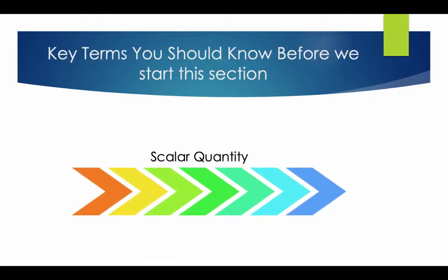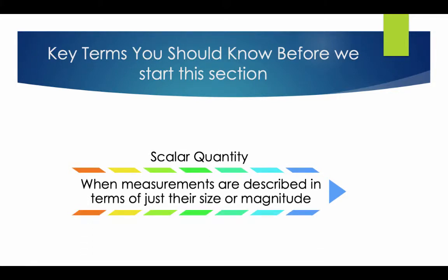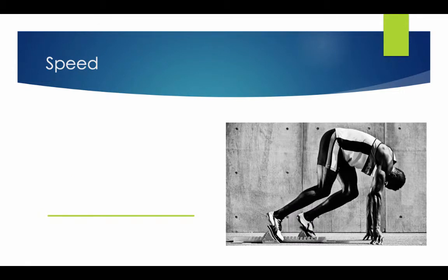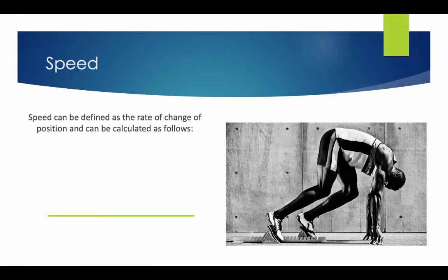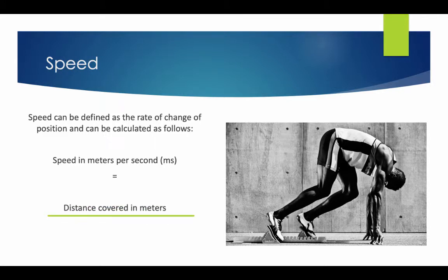Key terms you should know. Scalar quantity: when measurements are described in terms of just their size or magnitude. Speed: speed can be defined as the rate of change of a position, and can be calculated as follows — speed in meters per second equals distance covered in meters divided by the time taken in seconds.